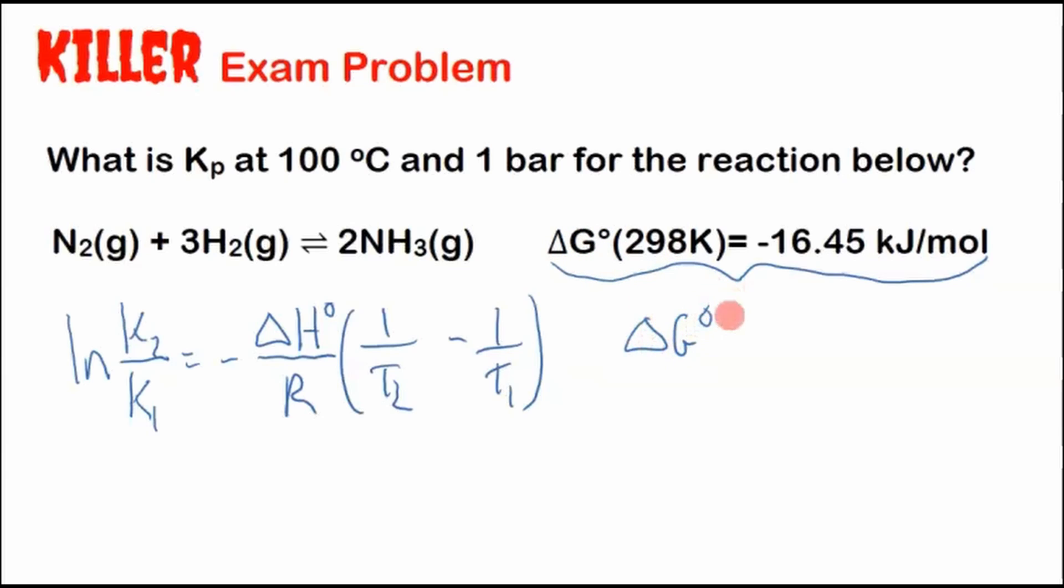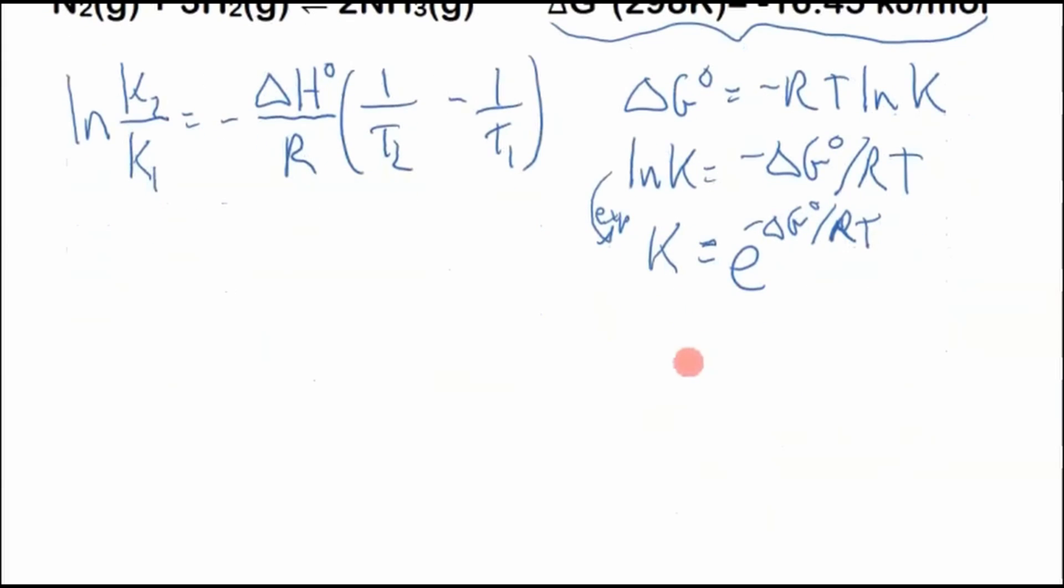We're going to use this relation that you likely have seen in class before: ΔG° = -RT ln K. Now we have all the information. So if we solve for ln K, we would get negative ΔG° over RT, and this is logarithmic form. We want to convert it to exponential form, so K equals e to the power of negative ΔG° over RT. And we'll just plug in some numbers here.